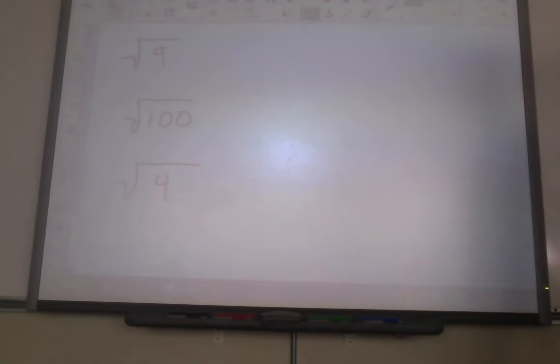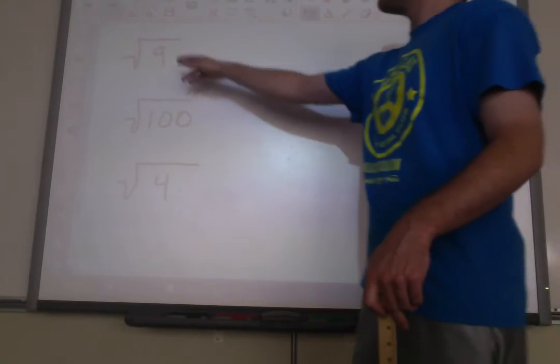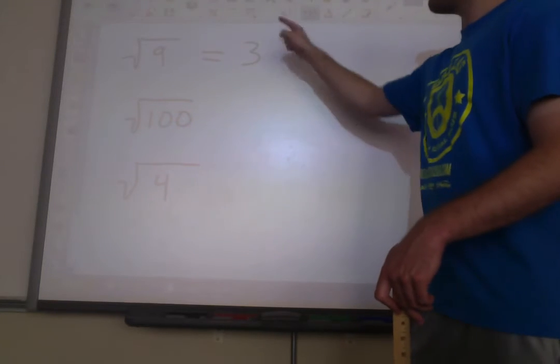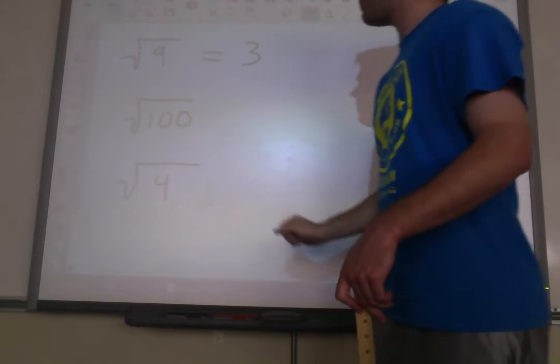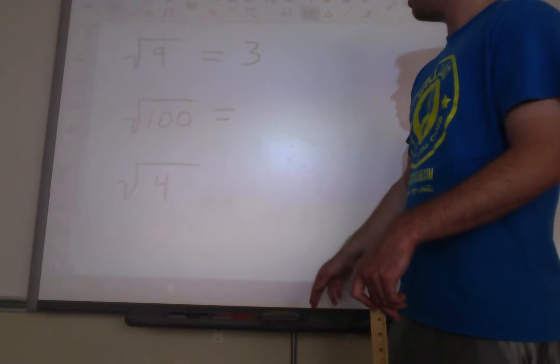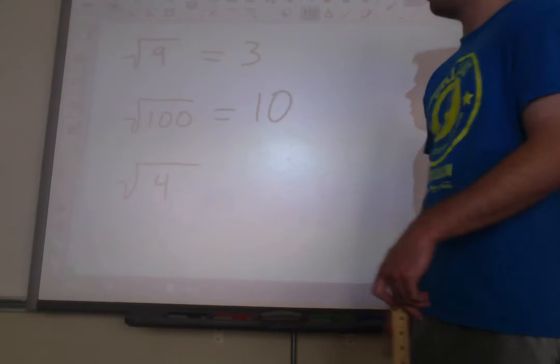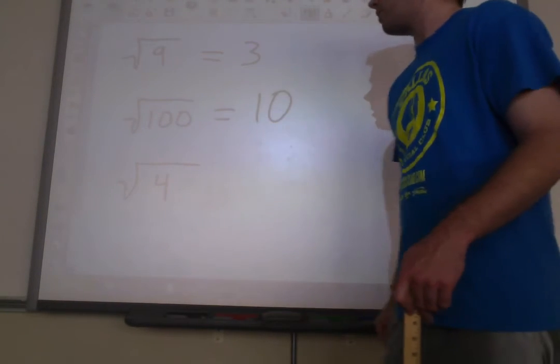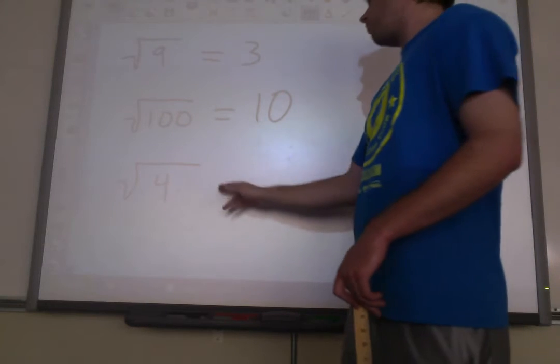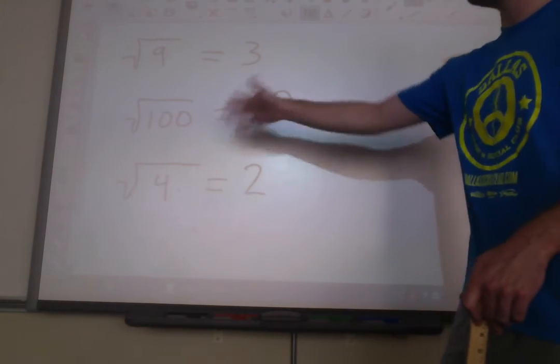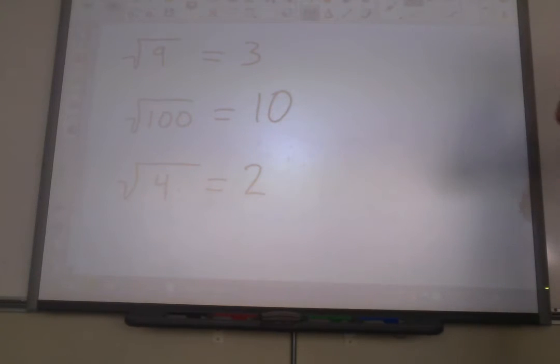Just a few other examples so that we really hammer the concept home here. The square root of 9 would end up being 3, because 3 times 3 equals 9. Now, the square root of 100 is going to equal 10, because 10 times 10, or 10 squared, equals 100. And the square root of 4 is going to be 2, because 2 times 2 equals 4.